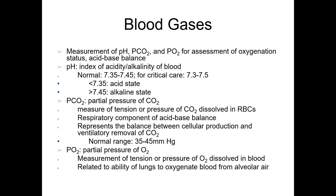Clinical chemistry blood gases: the measurement of pH, pCO2, and pO2 for the assessment of oxygenation status or acid-base balance. pH is an index of the acidity or alkalinity of the blood; normal reference range is 7.35 to 7.45. The pCO2, or partial pressure of carbon dioxide, is the measure of tension or pressure of carbon dioxide dissolved in the blood — the respiratory component of acid-base balance, representing the balance between cellular production and ventilatory removal of carbon dioxide. Normal range is 35 to 45 mmHg.